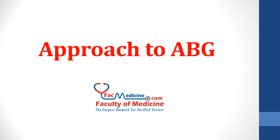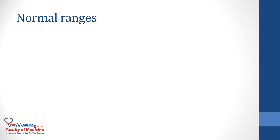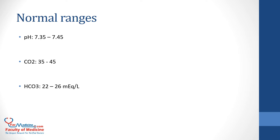Hello everyone, today we're going to discuss the approach to ABG. In order to interpret ABG correctly, we need to know the normal ranges of pH, CO2, and HCO3, where pH is between 7.35 to 7.45, CO2 between 35 and 45, and HCO3 is between 22 to 26 milliequivalent per liter.